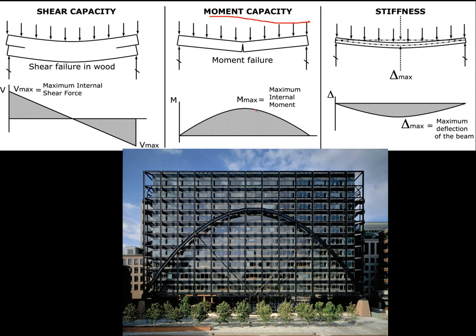That moment distribution in a simple span beam is a parabola that peaks at the center, which is why failure always occurs at or very close to the center. The fact that it's parabolic means it would be advantageous to shape the member profile to fit this parabola.